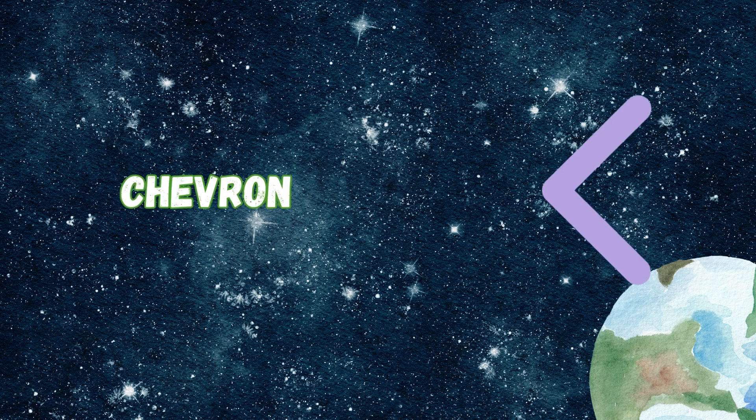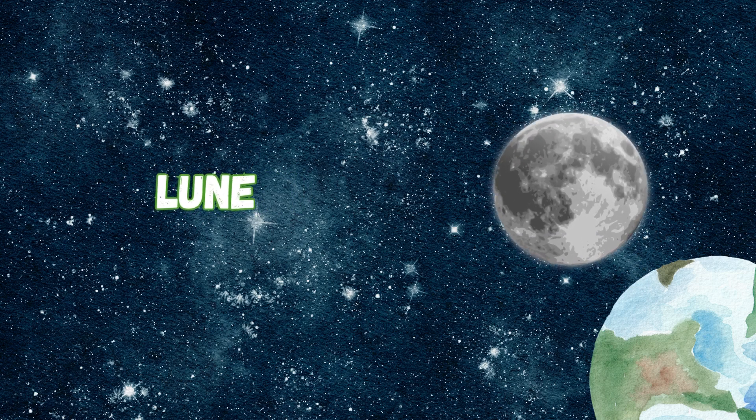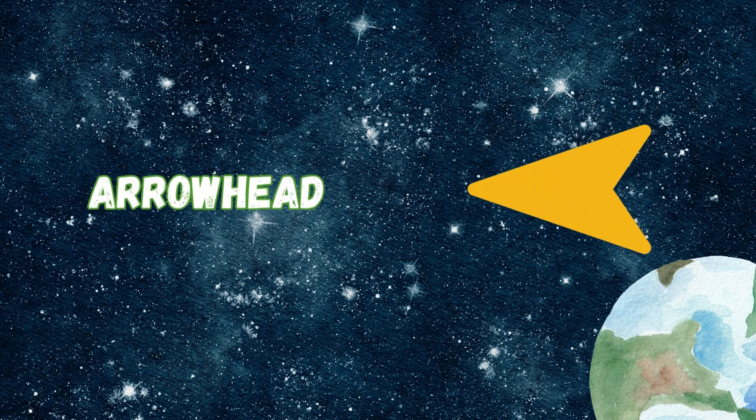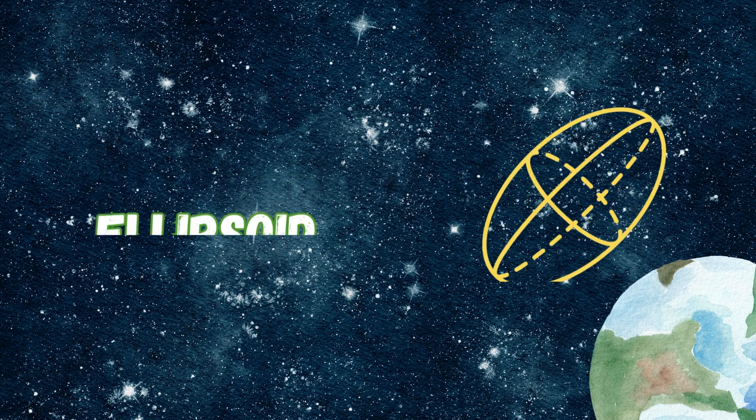Chevron looks like a pointed V. It shows a path for you and me. Lune is a slice, curved and round. It's a piece of a circle found.